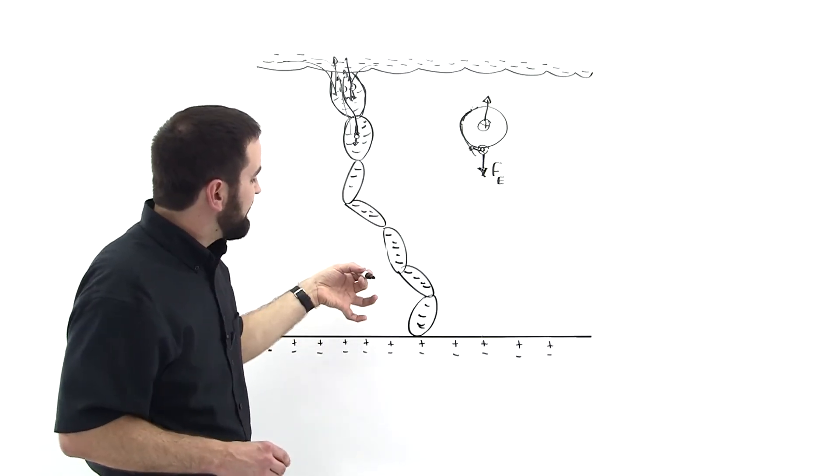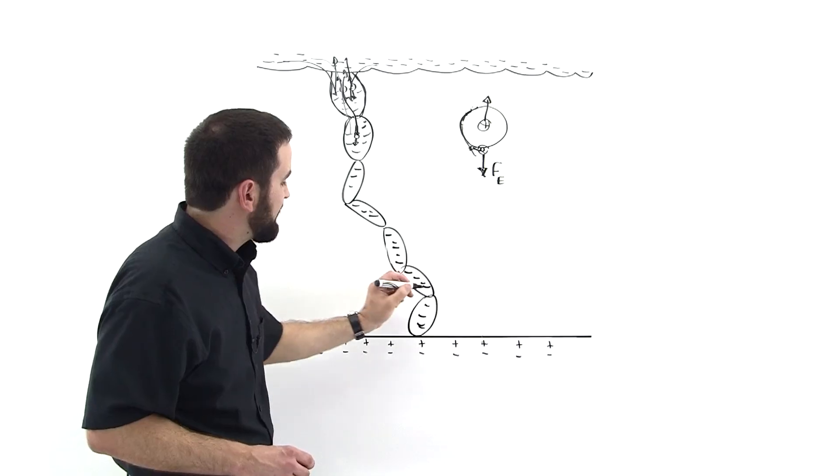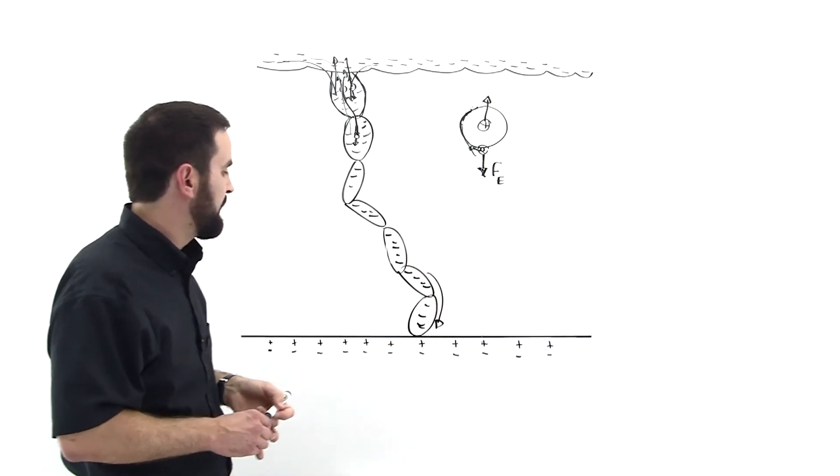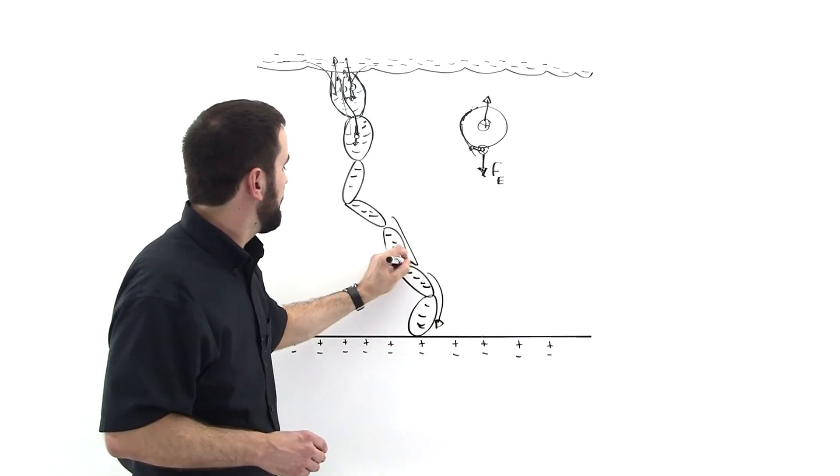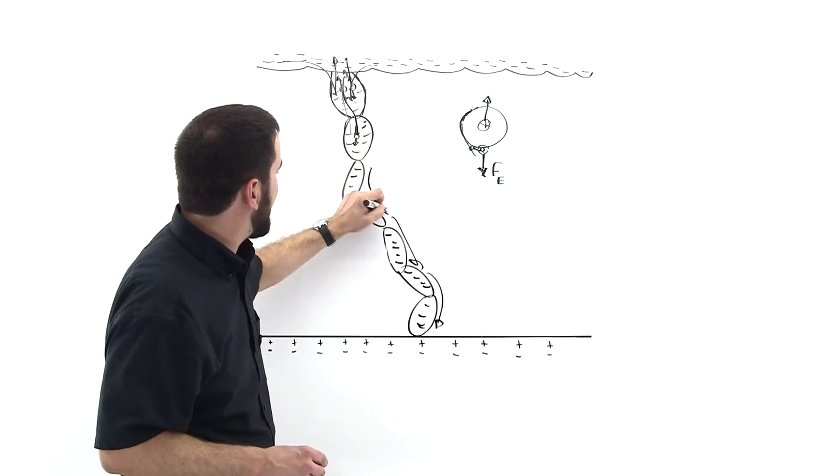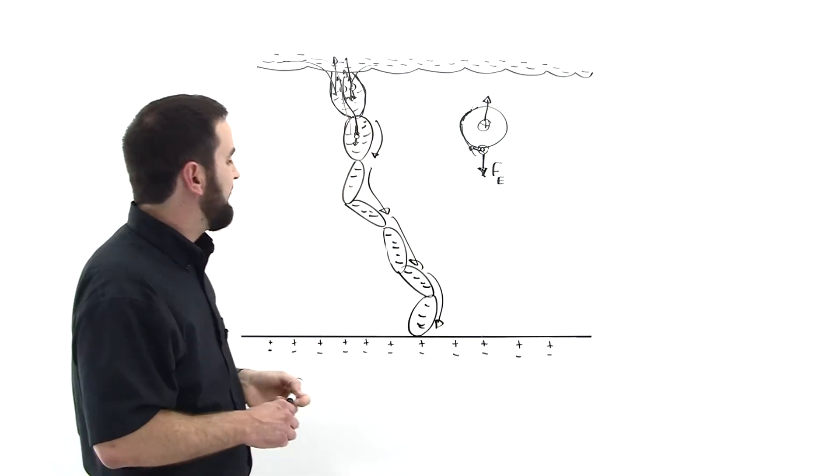And so these electrons, the ones that they dump first are these guys here, they dump first. And then these guys follow behind them. And they dump in that order.